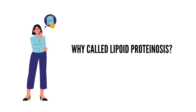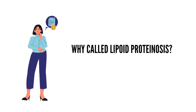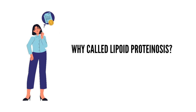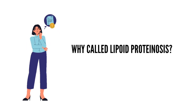It's called lipoid proteinosis when hyaline-like material is deposited in the skin and other organs — well, it's actually a misnomer. The original designation 'lipoid proteinosis' refers to the histological features of the deposited material, which shows similarities to both lipid and proteins, although no abnormalities in lipid metabolism have been identified.